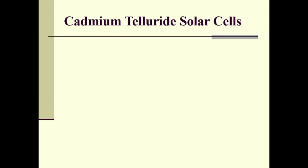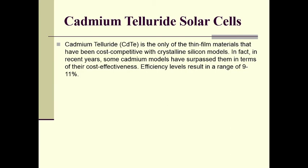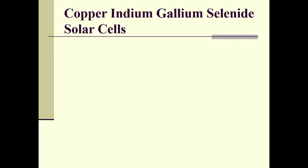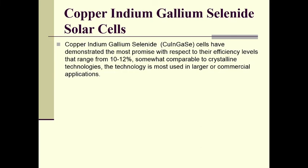Cadmium telluride (CdTe) solar cells are the only thin-film material that has been cost-competitive with crystalline silicon modules. In recent years, some cadmium models have surpassed crystalline silicon in cost effectiveness, with efficiency levels ranging from 9 to 11 percent. Copper indium gallium selenide (CIGS) solar cells have demonstrated the most promise regarding efficiency, ranging from 10 to 12 percent — comparable to crystalline technologies — and are most used in larger commercial applications.